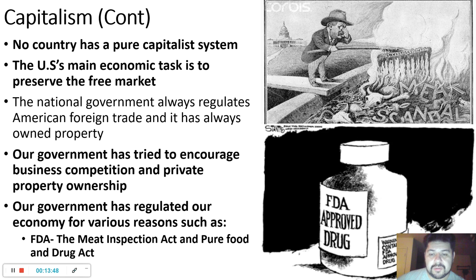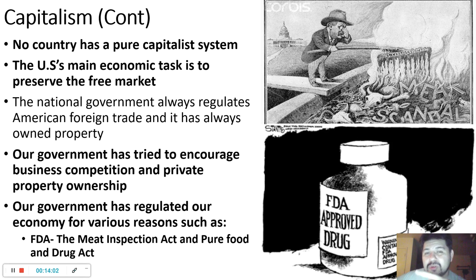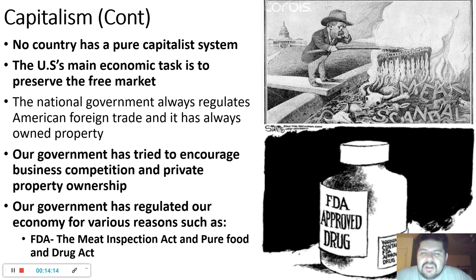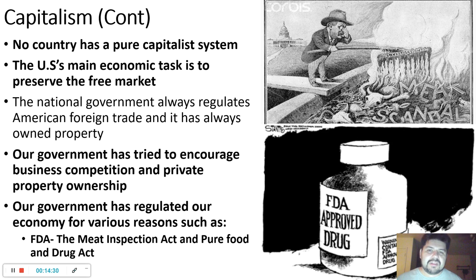The government has tried to encourage business competition because it makes the price of things come down, which helps the consumer. They also want people to own private property and start businesses — if we have our own homes, we want to take care of them and invest in them. Our government also regulates our economy through various ways, one of the biggest being the FDA — the Food and Drug Administration — which makes sure the products we eat and the pills we take are safe, and that's why you hear about recalls on products.